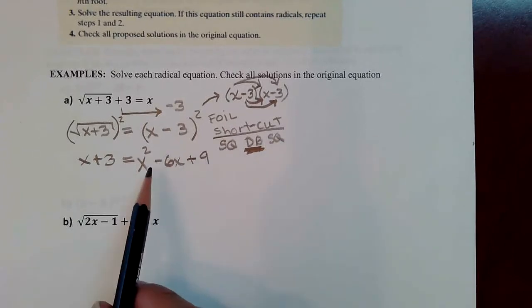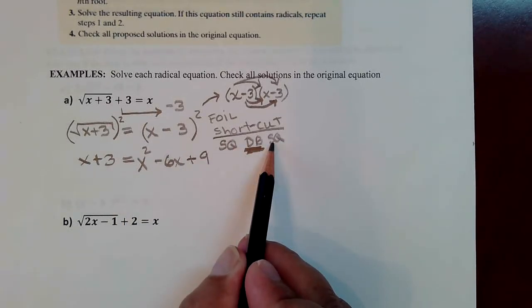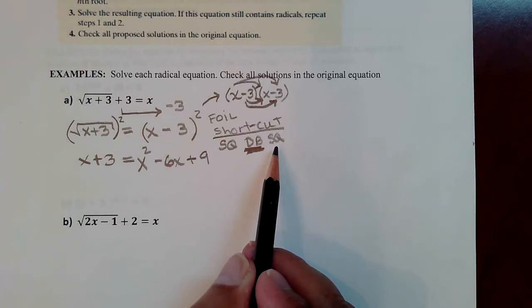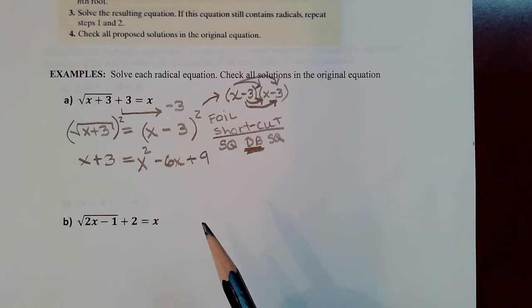There does happen to be a shortcut for squaring a binomial and that is square, double, square. I was demonstrating that but ran out of time in the last video. When you use the square, double, square, as I've demonstrated in previous sections, the first square means square the front term. That's where the x squared came from.